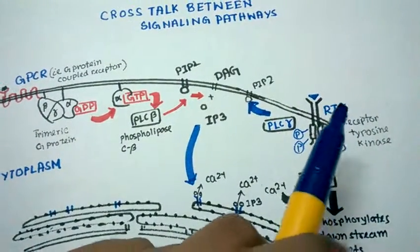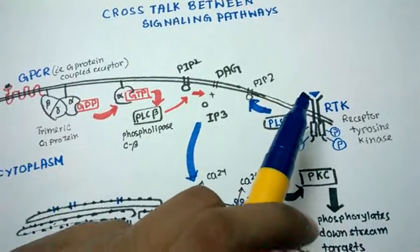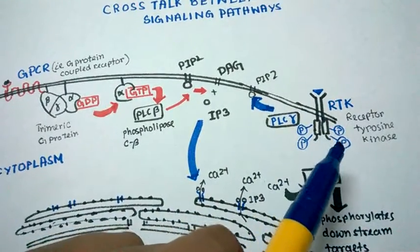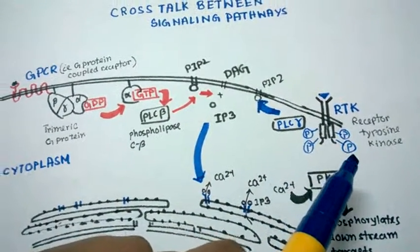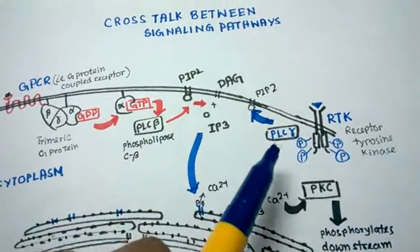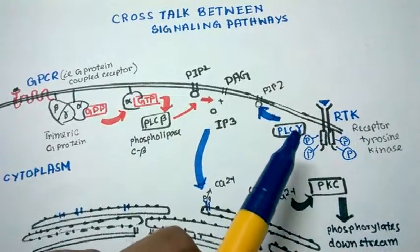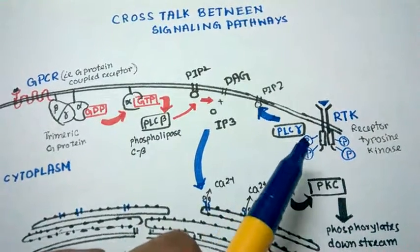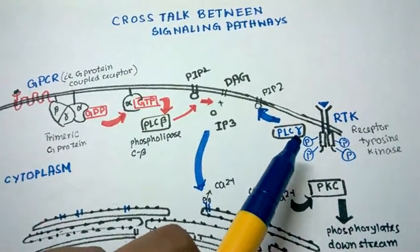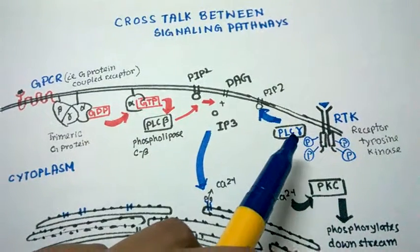On the other side, the receptor tyrosine kinase, upon ligand binding, gets phosphorylated on its cytoplasmic domain and activates phospholipase gamma.